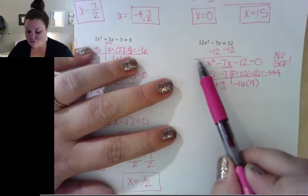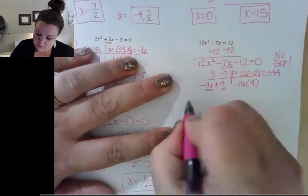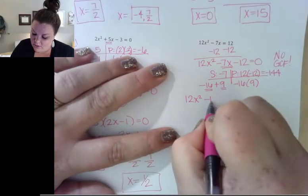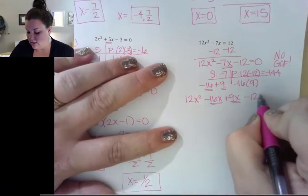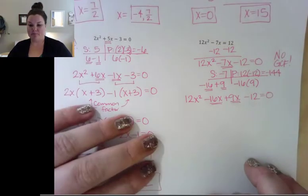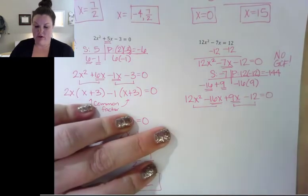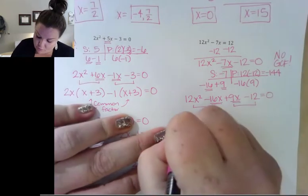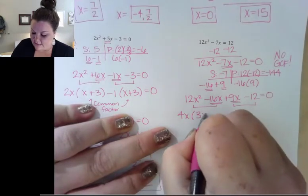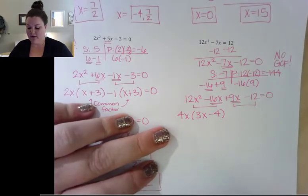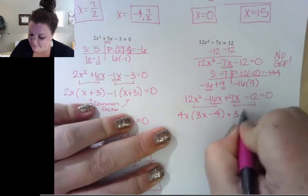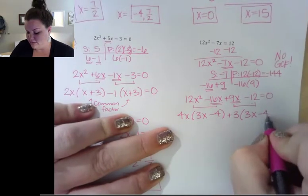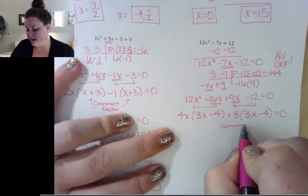We can't use the shortcut because our leading coefficient is not 1. So we write our leading term 12x squared, put in our two new middle terms as negative 16x and 9x, then our constant term negative 12, equal to 0. Now I group: the first two have a common factor of 4x — taking out 4x leaves 3x minus 4. From the second pairing, I can divide out a positive 3, which leaves 3x minus 4. My leftovers match.